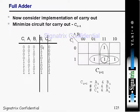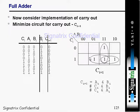We have seen the derivation for sum using rows and columns. Now we are going to see how to derive the expression for carry-out. Similarly, you implement a K-map and minimize the circuit for carry-out (Ci+1).